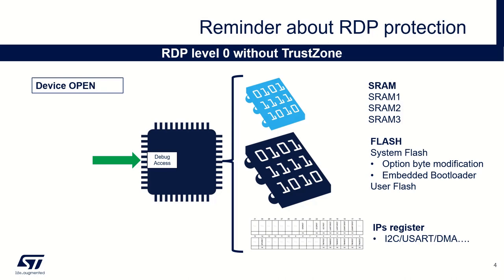Let's start with the RDP level 0 without TrustZone. Here the device is fully open, that means the debug access is open, and you can access SRAM, flash content and all the IP registers in your system.